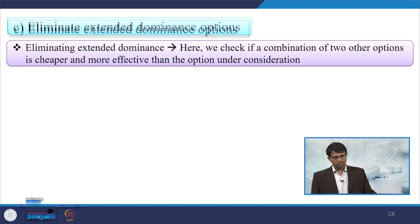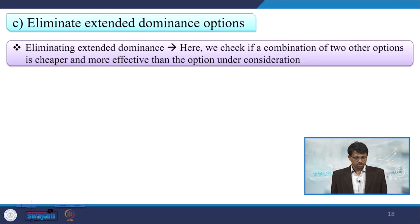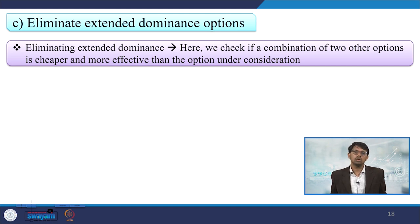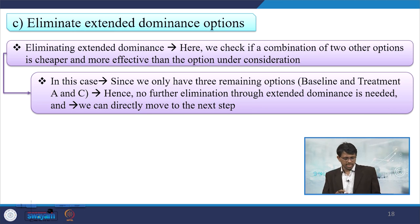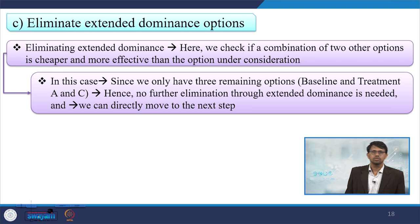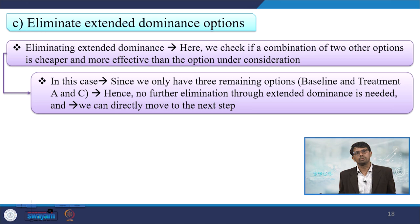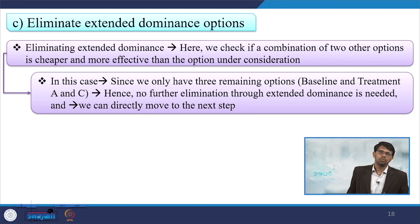The third step is eliminating extended dominance options. Here we check if a combination of two other options is cheaper or more effective than the option under consideration. In this case we only have three remaining options. We combine the baseline and treatment C — hence no further elimination through extended dominance is needed, and we move to the next step.